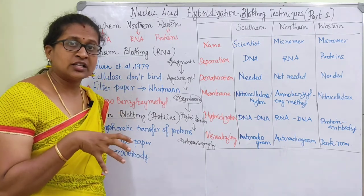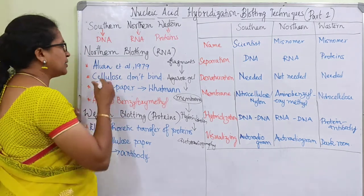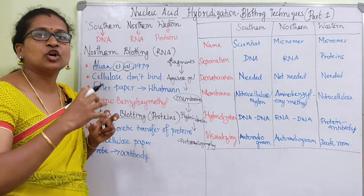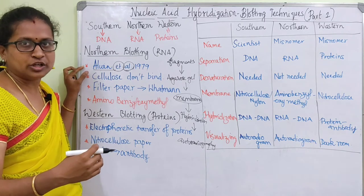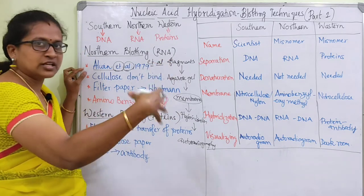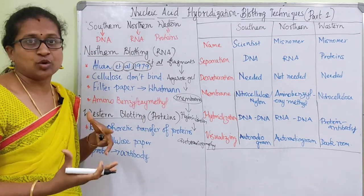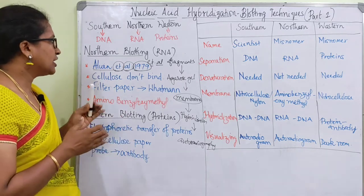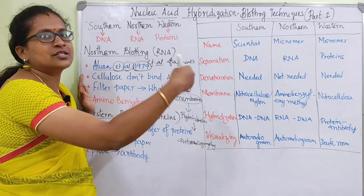Southern blotting was designed by a scientist. In 1975, southern blotting was designed. Later, after 4 years of research, in 1979, northern blotting was designed and explained. Southern, northern, and western blotting are going to be parallel to each other.